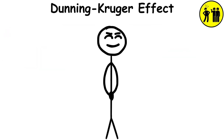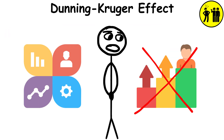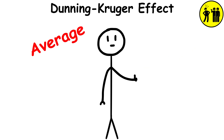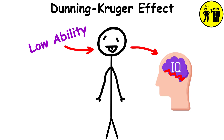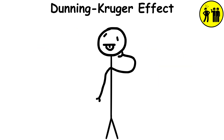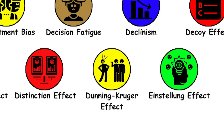Dunning-Kruger effect. Those who are overconfident in their ability may not actually be the top performers, whereas those who believe they are average or even slightly below often demonstrate great skill. People of low ability may not have enough intelligence to fully grasp how complicated something can be, causing them to overestimate their knowledge or ability.